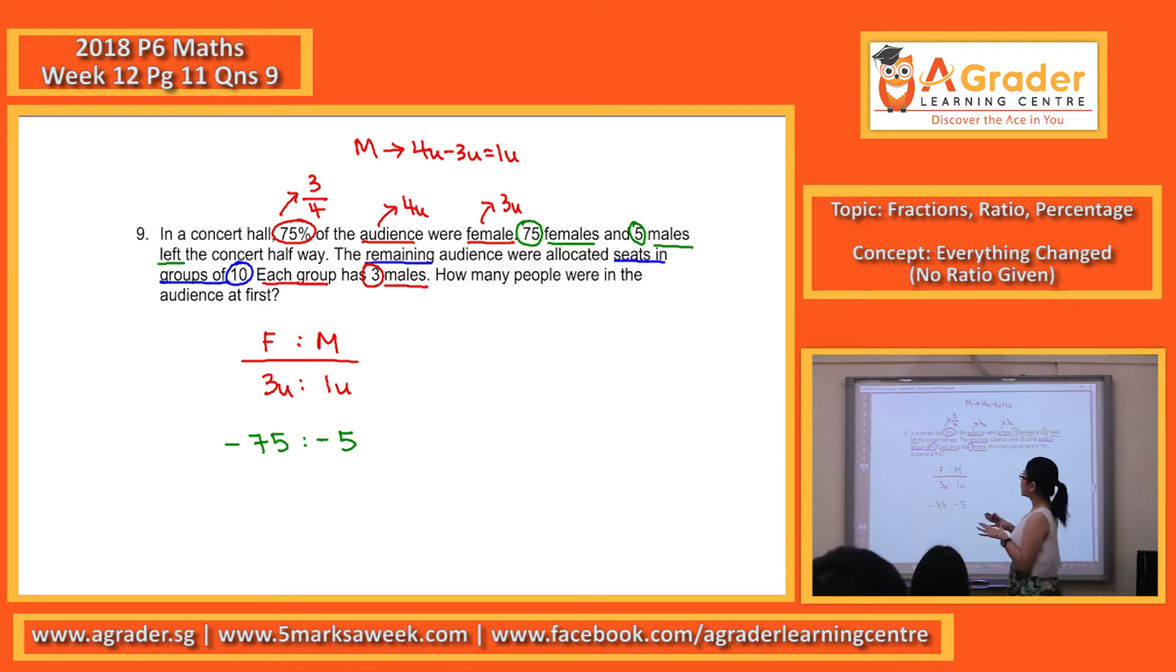Then they said that each group has 3 males. So this 10, take note, it's our so-called one set here. There will always be 3 males. So if there's 3 males, in terms of the female, 7.